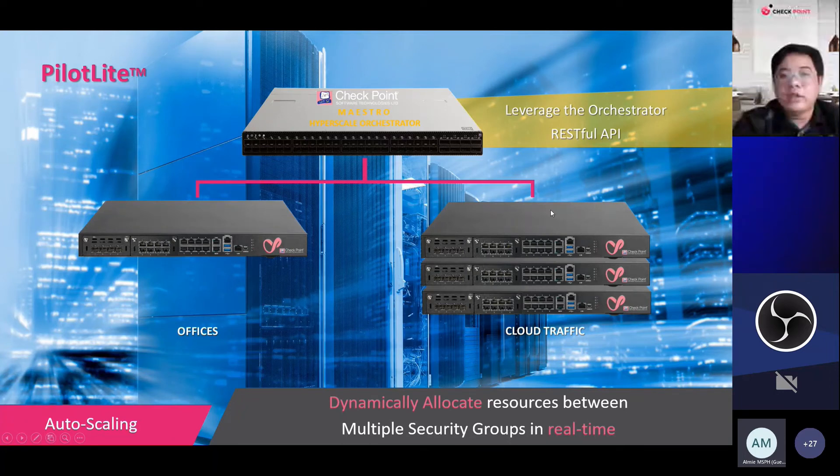When cloud traffic increased significantly and office traffic dropped to 20 percent, auto-scaling moves devices between security groups without re-architecting the network. The reallocation can be done manually or automatically, and within six minutes a device is reassigned and scaling is complete.